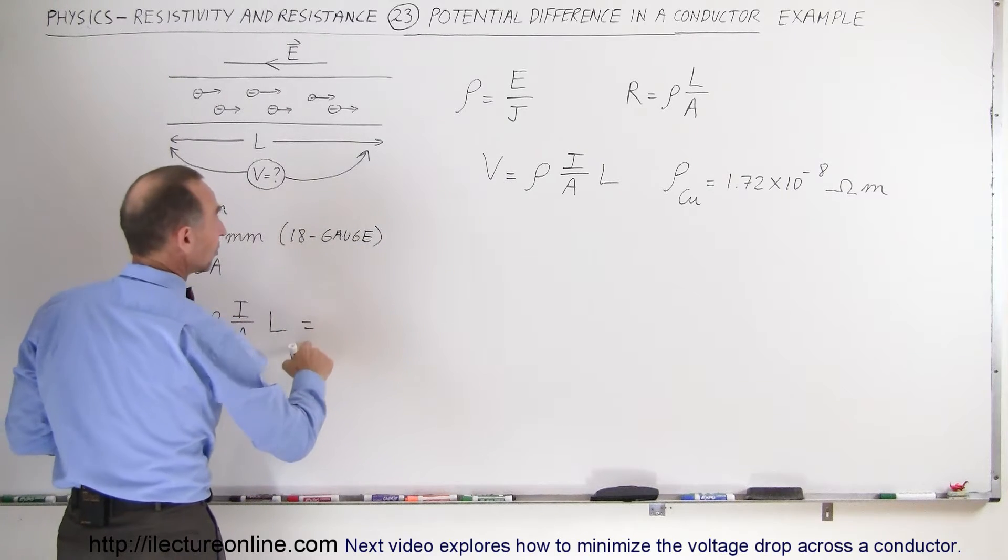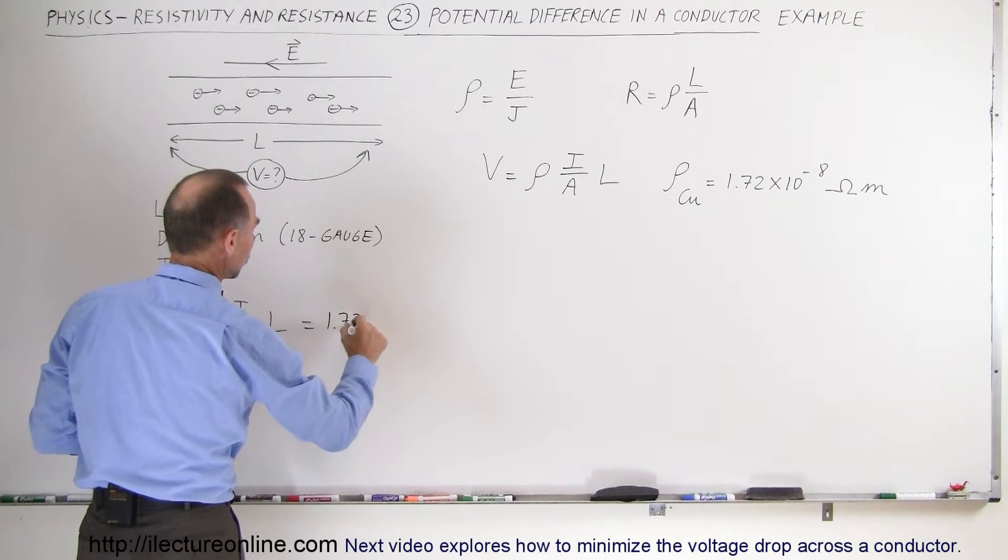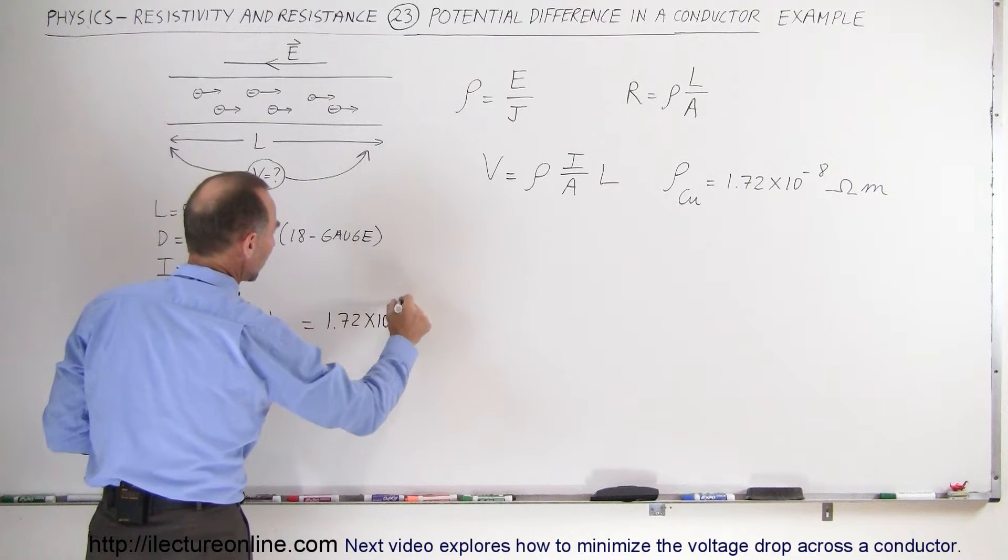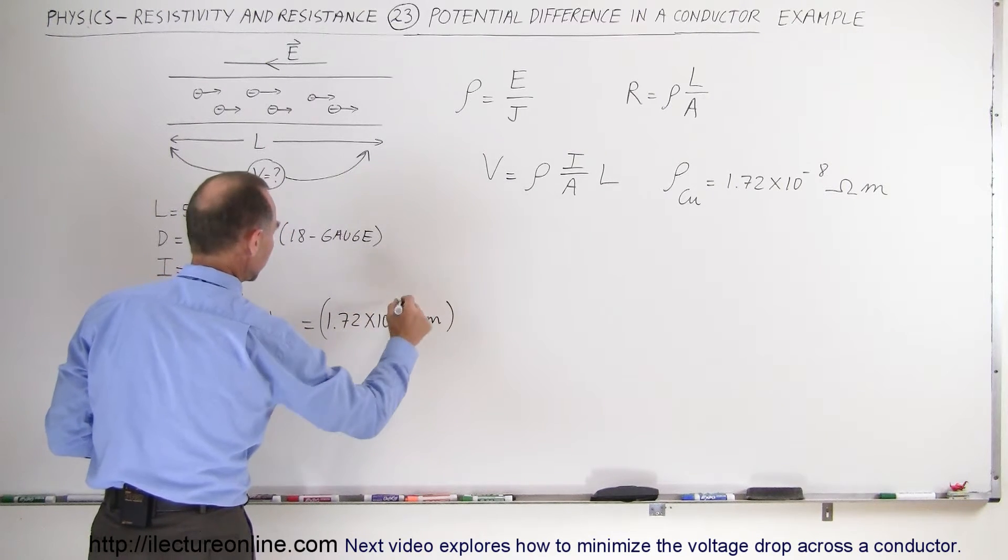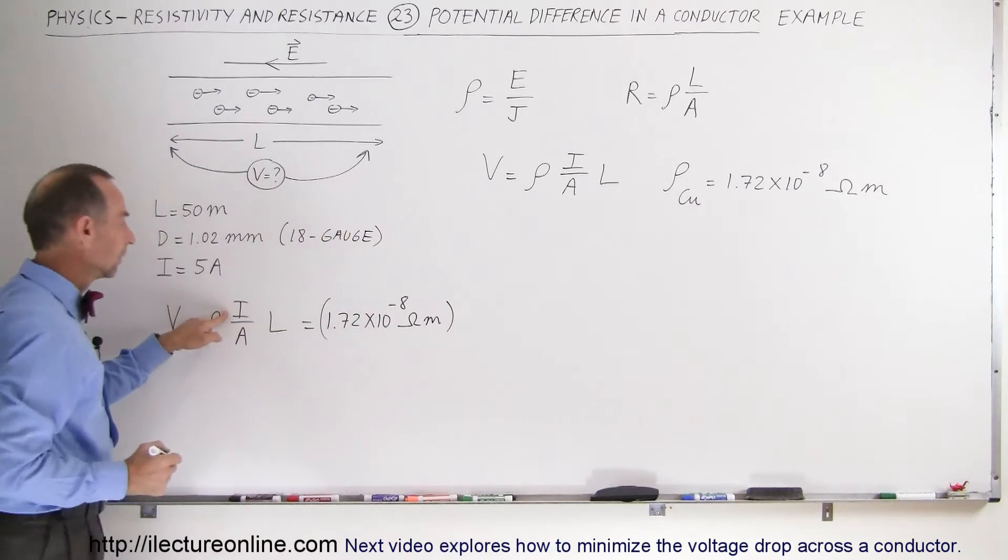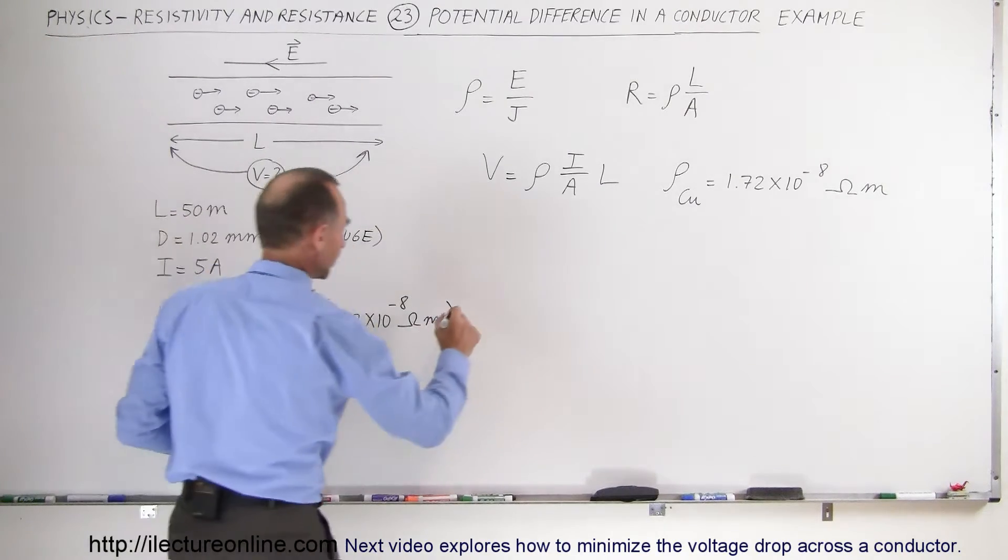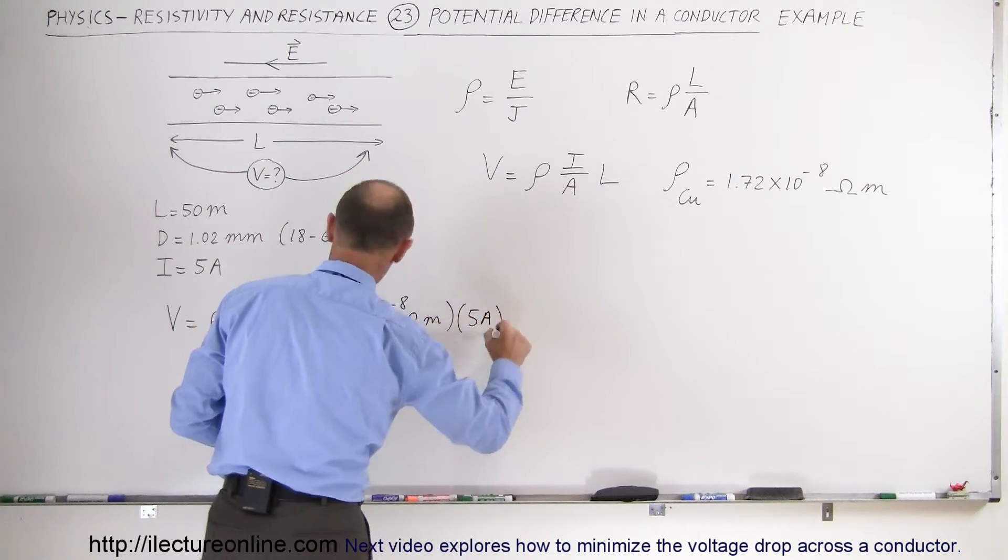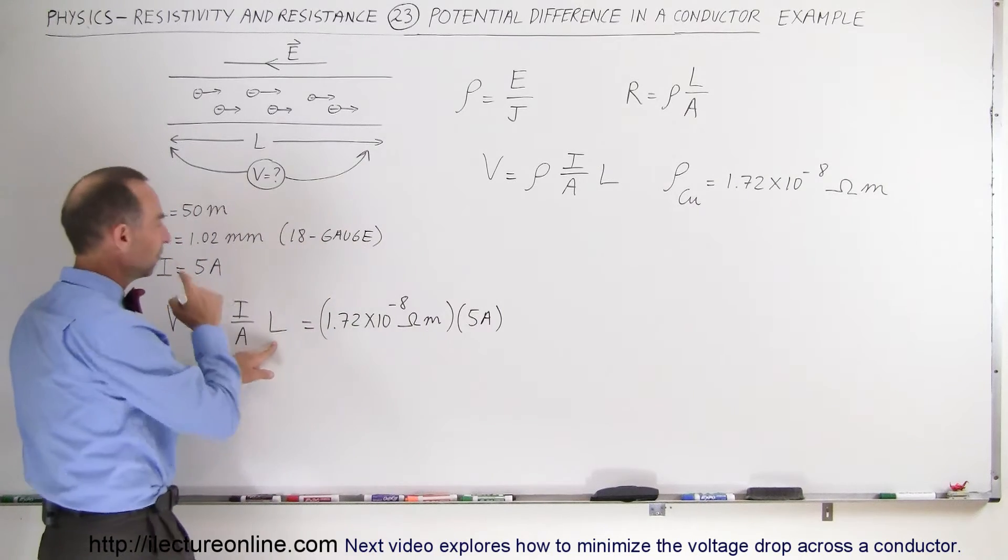So in this case the resistivity is 1.72 times 10 to the minus 8 ohm meters. The current 5 amps. The length of the wire 50 meters.